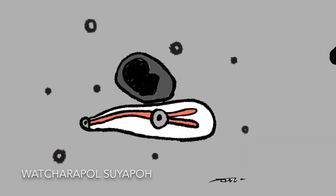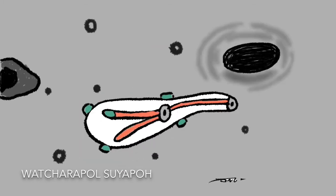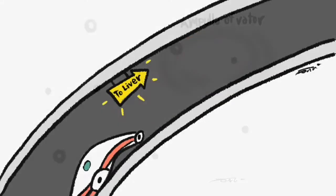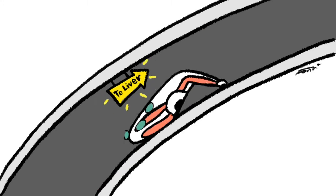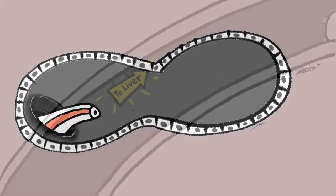This is a Opisthorchis viverrini, the liver fluke. Her name is Vivian. As soon as she hatches from an egg in the duodenum, she carries many bacterial friends within her body. She migrates to the liver and settles in the bile duct.